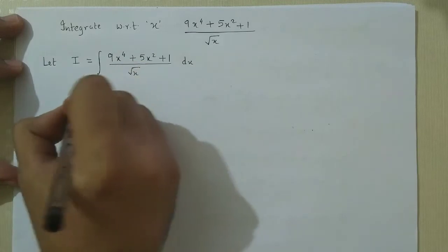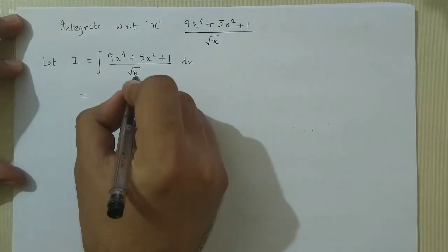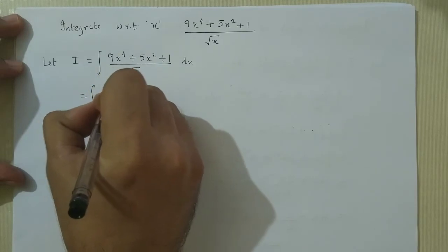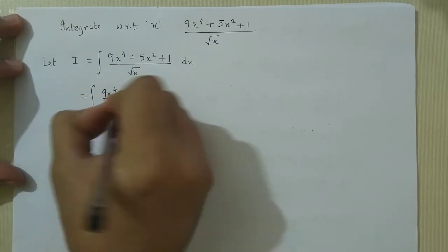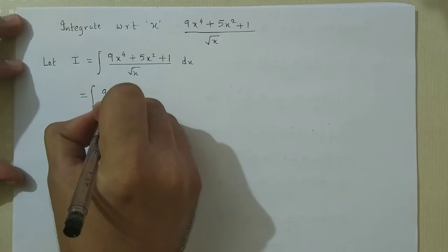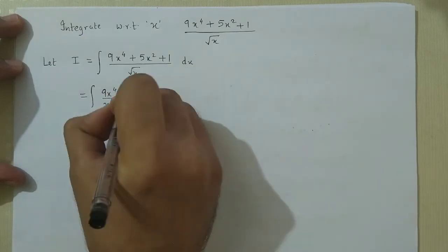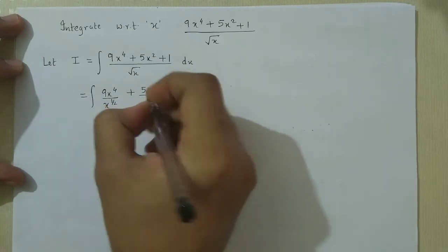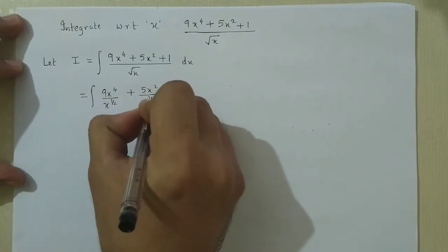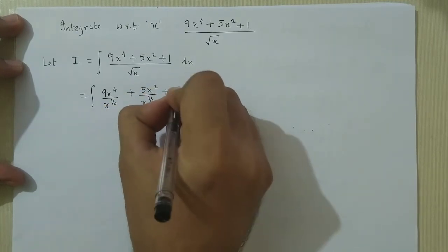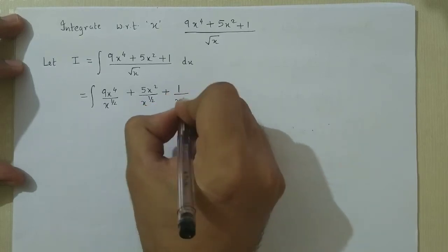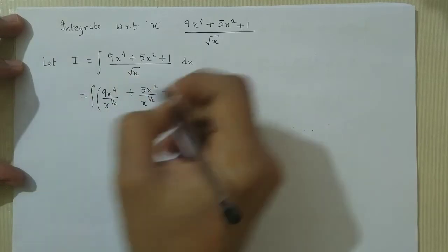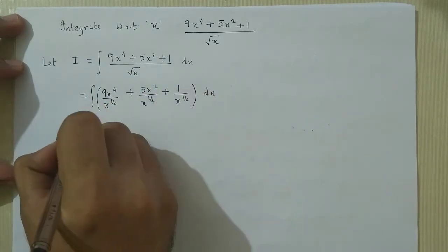Now we separate the denominator and obtain 9x^4 over root x, plus 5x^2 over root x, plus 1 over root x, dx. Root x can be written as x raised to 1/2. Now we use the laws of indices.